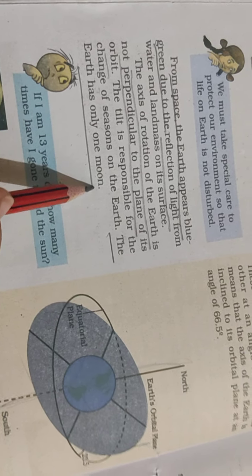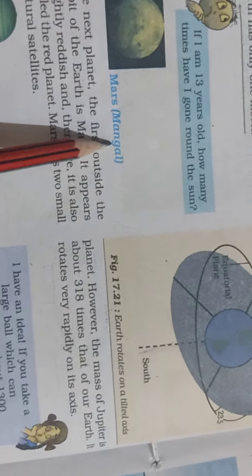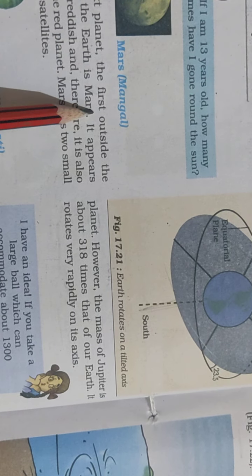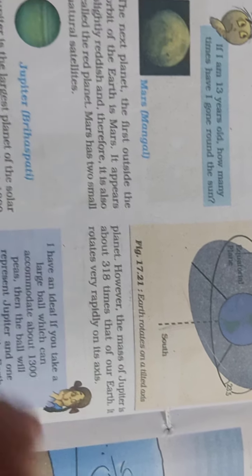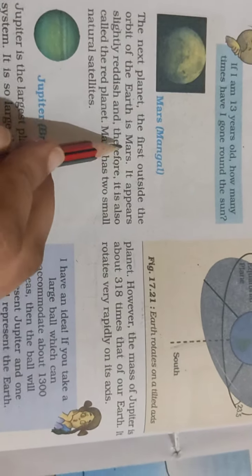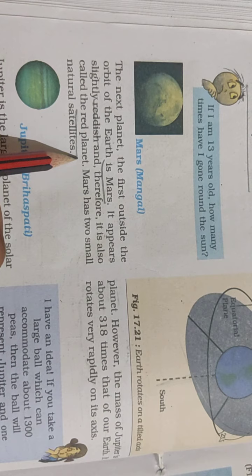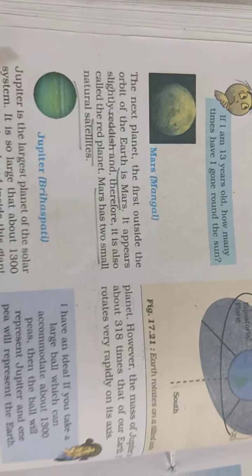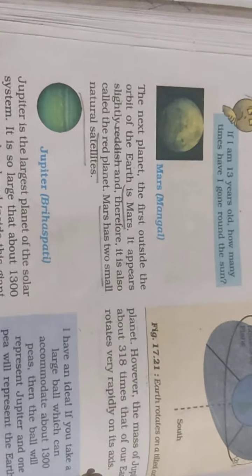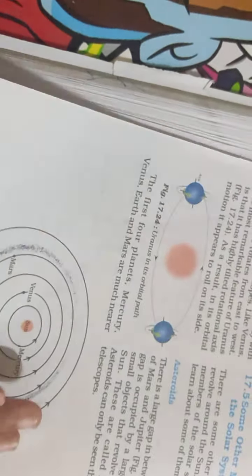Next is Mars. Mars is the first planet outside the orbit of Earth. It appears slightly reddish in color, therefore it is also called the Red Planet. It has two small natural satellites. Today we discussed the solar system, constellations, and some planets: Mercury, Venus, Earth, and Mars.